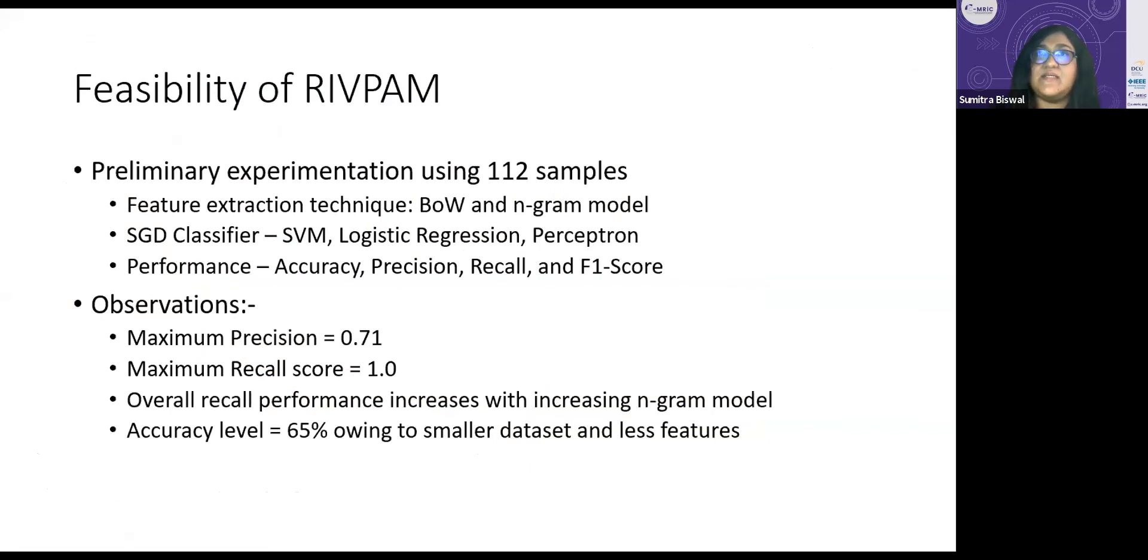Now coming to RIVPAM's feasibility, RIVPAM is basically a research idea and it's still in its nascent stage. So a very preliminary experimentation has been made on RIVPAM with only a minuscule dataset of 112 samples, which is really, really small. Despite that, these 112 samples are basically natural samples. These are real-time vishing calls, phone calls. These are real phone calls, actually 112 samples that have been collected from various sources and they have been diagnosed using feature extraction techniques and three sets of classifiers: SVM, logistic regression, and perceptron. The performance has been analyzed apart from accuracy with the help of precision, recall, and F1 score.